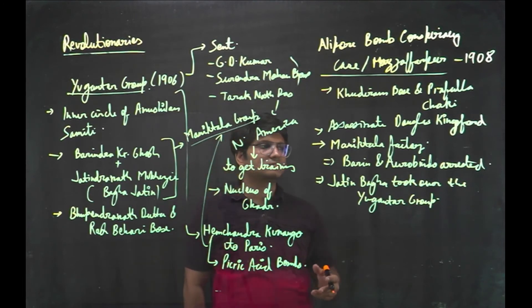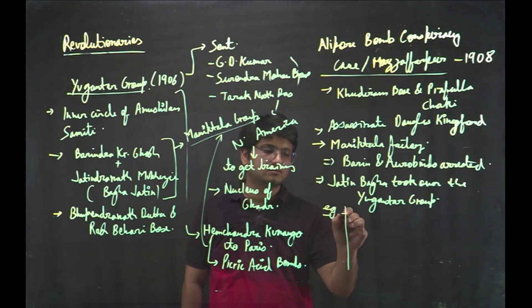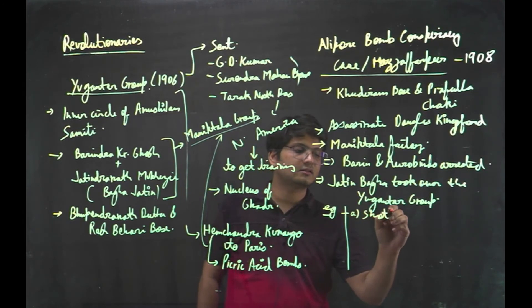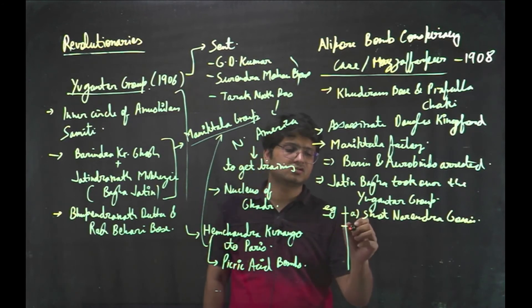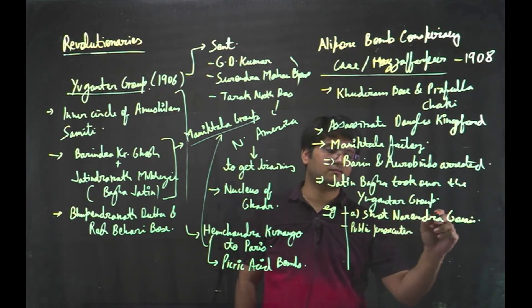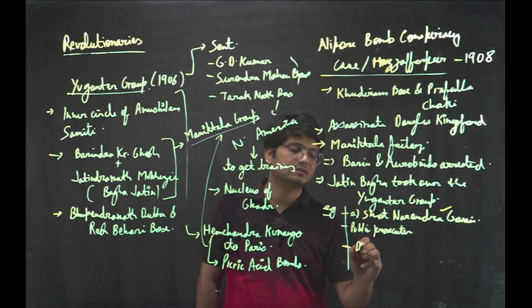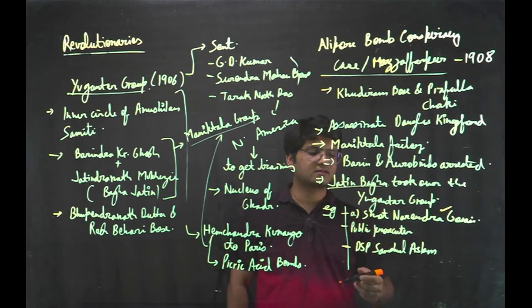Whoever defended the other persons, whoever turned approver and whoever is helping the approvers, Jatin Bagga was assassinating him. For example, he shot Narendra Ghoshain who turned the approver. He shot the public prosecutor who was prosecuting the case against the assassins of Narendra Ghoshain. He shot DSP Shamsul Aslam who was conducting the Alipur case.